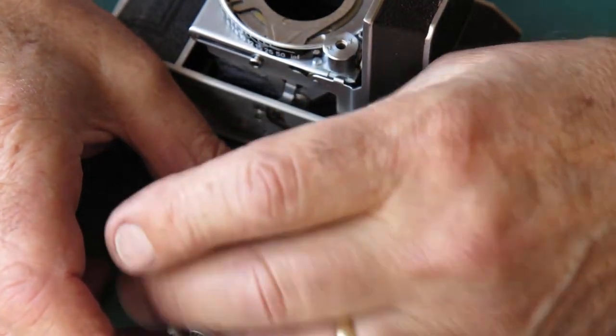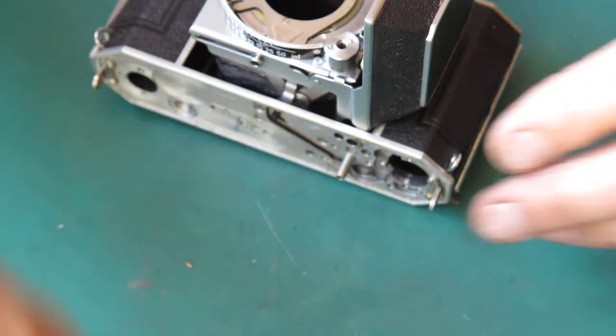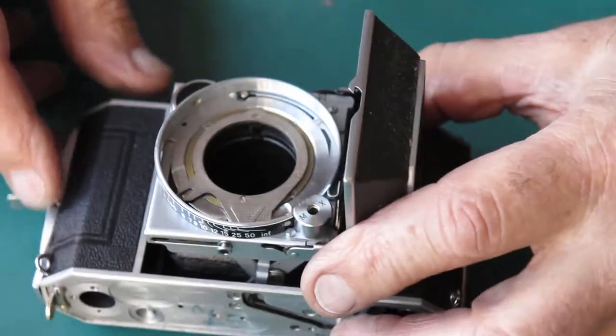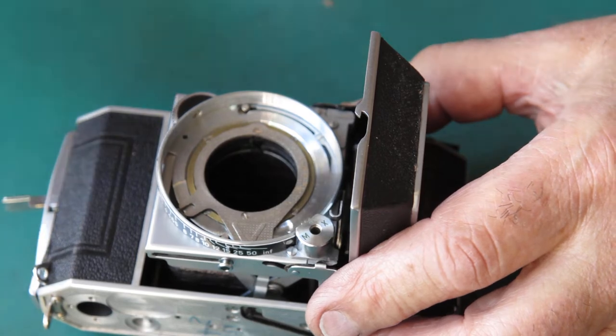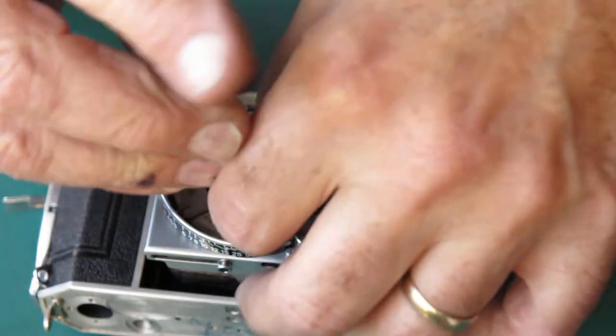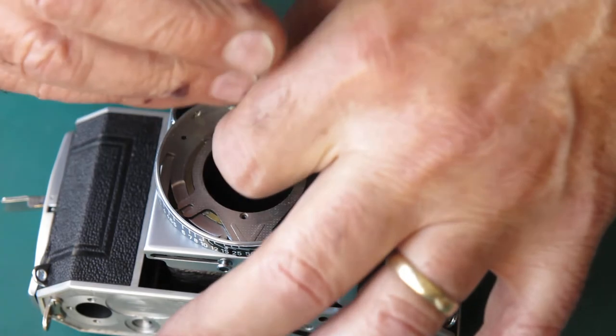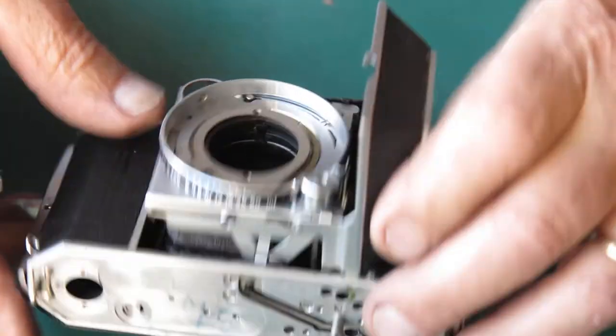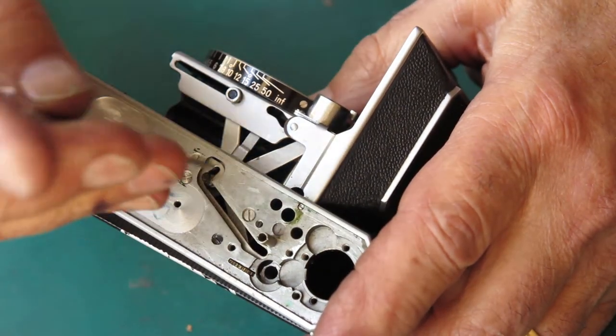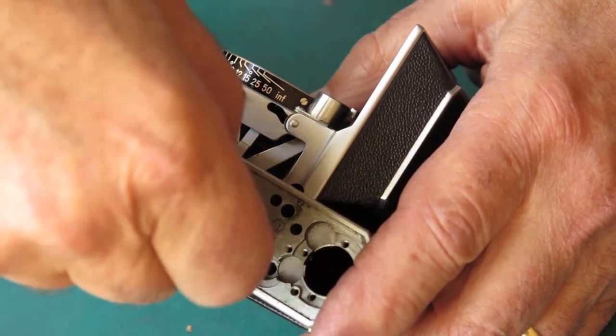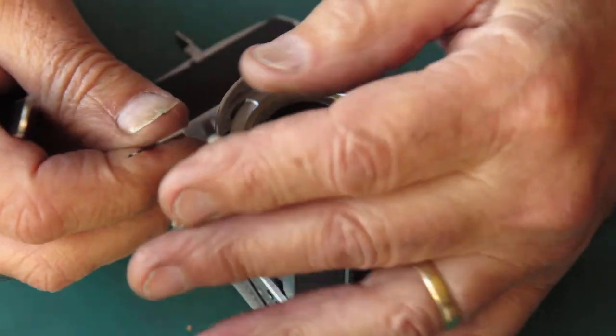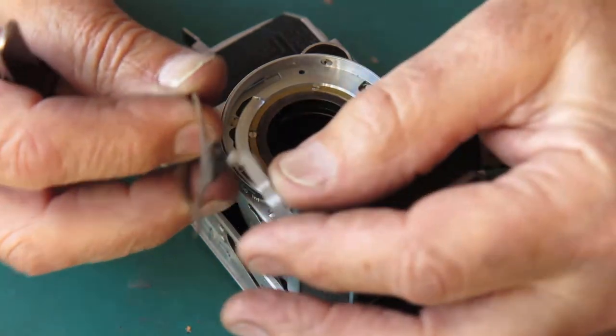I'll pop the lens and shutter assembly off to one side. This plate on the front positions the shutter and stops it from turning. It also has a coupling for the range finder - that screw pulls the range finder arm forward as you move the focus towards infinity. There's the plate with its hinged arm.